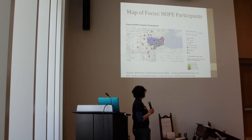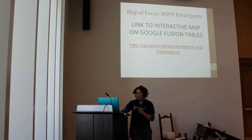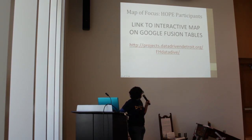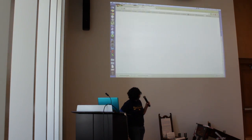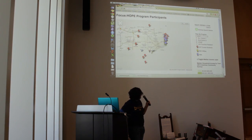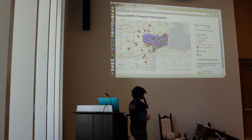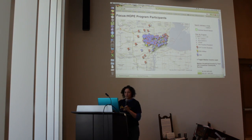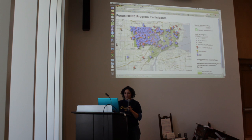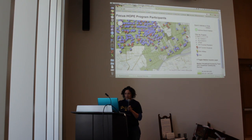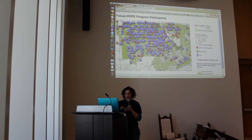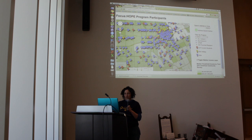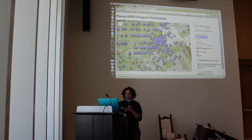along with median income from the American Community Survey to layer this information. Drew went ahead and actually made an interactive map. We have our map of the community — this is all of Detroit — and we can zoom in to the particular neighborhood where Focus Hope is working and actually filter by type of program.